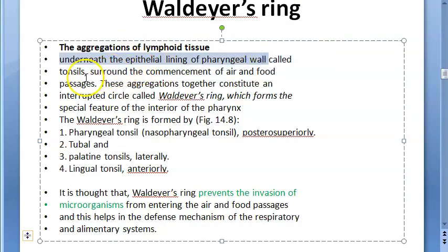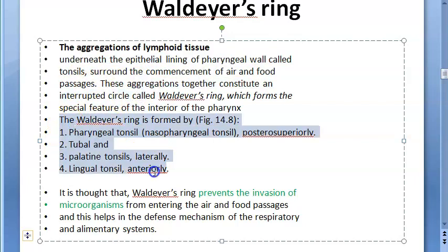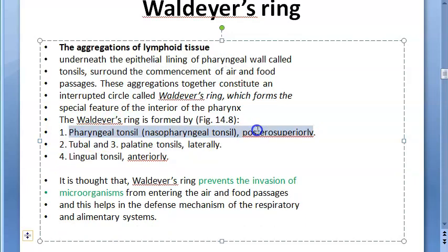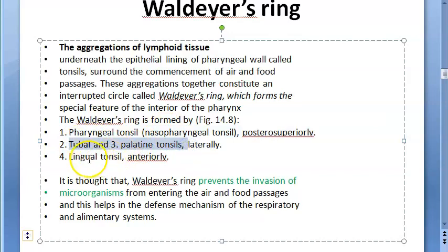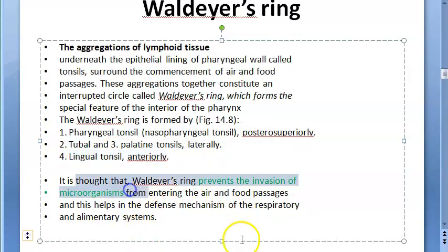It is an interrupted circle of lymphoid tissue consisting of the pharyngeal tonsil (nasopharyngeal tonsil or adenoids), which is posterior superiorly. Laterally you have the tubal tonsils on both left and right sides, and the lingual tonsil is anteriorly.